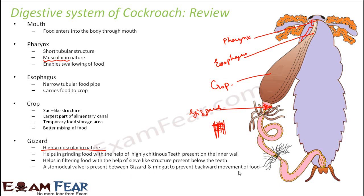A stomodeal valve is present between the gizzard and the midgut to prevent backward movement of food. The gizzard is the last part of the foregut and the midgut starts after it. This valve ensures food moves in the correct direction — downward — and does not move back from the gizzard to the crop or esophagus.